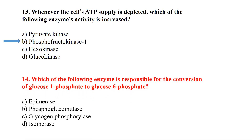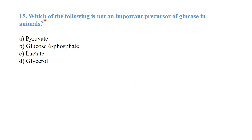Which enzyme is responsible for the conversion of glucose 1-phosphate to glucose 6-phosphate? It is phosphoglucomutase. Phosphoglucomutase is responsible for this conversion. MCQ number 15: which of the following is not an important precursor of glucose in animals? Glucose 6-phosphate is not a precursor of glucose in animals.